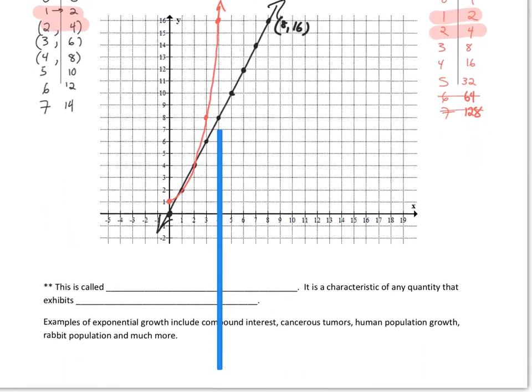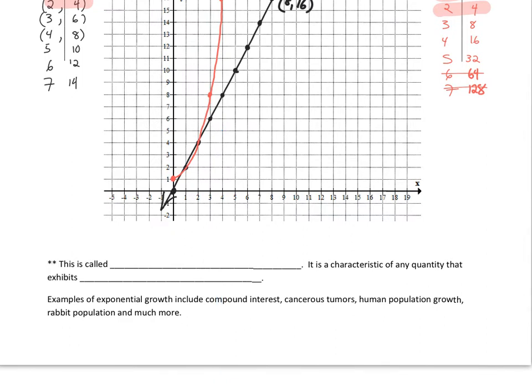So let's move down and I'll get my ruler out of the way here. There we go. So what we end up calling this growth by doubling, and this is a characteristic of any quality that exhibits exponential growth. And we just call this growth by doubling because if you come back and look at all these y values, like this one says four, we double it to get eight, we double it to get 16, we double it to get 32, so on and so on and so on. And that has to do with what the base is. The base was two, so we will double each time. So examples of exponential growth include compound interest, cancerous tumors, human population growth, rabbit population, and much more.